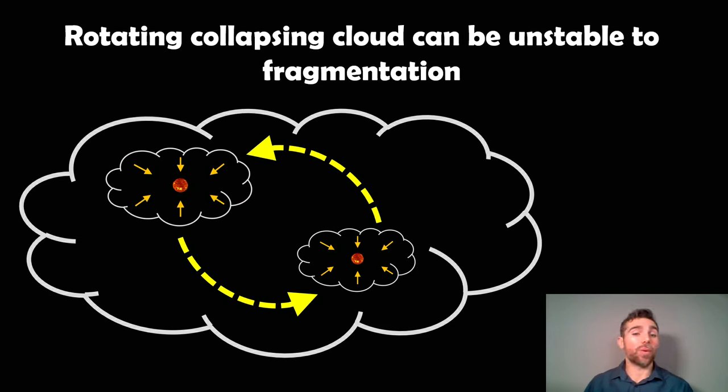It's worth noting that in this scenario you can get triple star systems and greater. It's not just always a binary star system. Fragmentation of a rotating collapsing gas cloud can give rise to binary or multiple star systems.